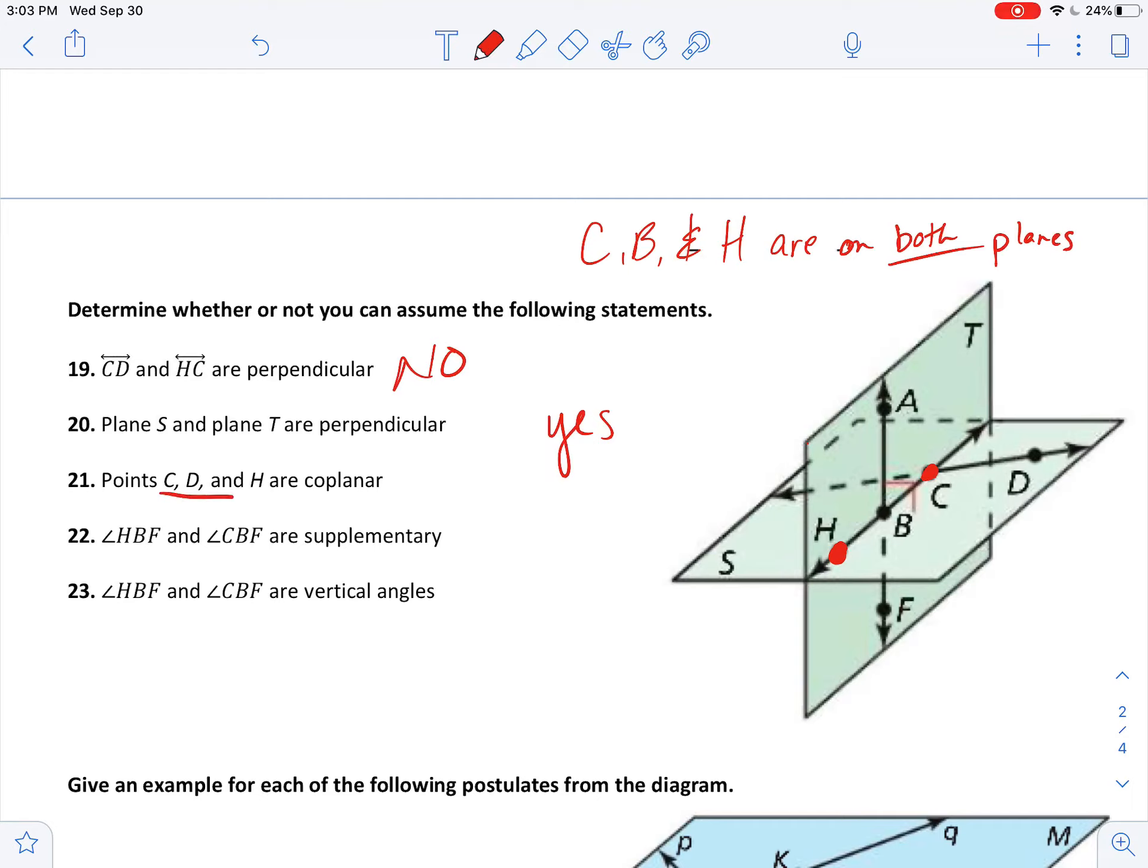And that's very important here. So I want to know, are they on the same plane as letter D, as point D? Well, if they're on both planes, then they've got to be on the plane that D is on.